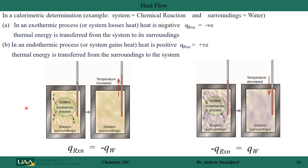In an exothermic reaction, the system gives up heat to the surroundings, so the heat of reaction is negative and the temperature of the surroundings increases. In an endothermic reaction, heat must be put into the system, so the heat of reaction is positive and the temperature of the surroundings — the water — goes down. Take the time to review that over and over again so it becomes second nature; it's a hard concept to grasp.